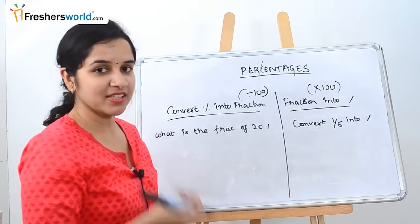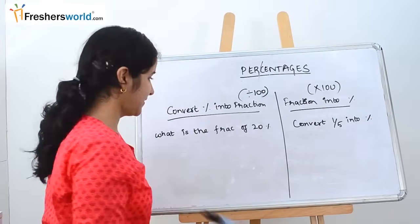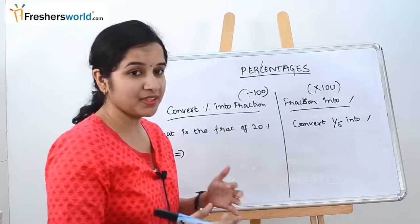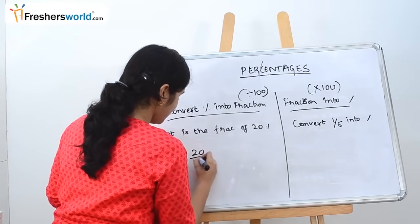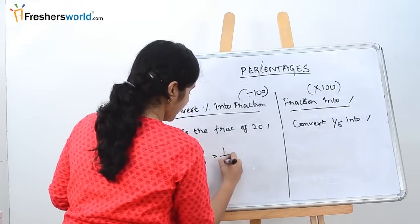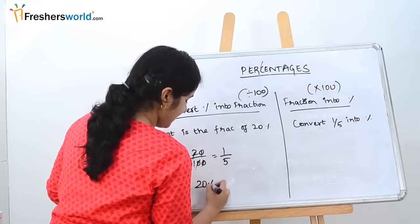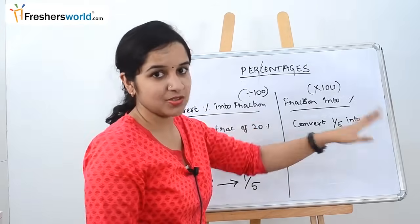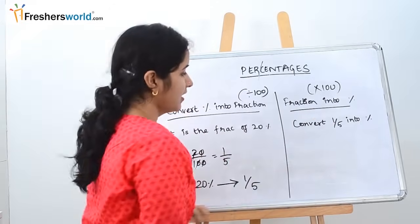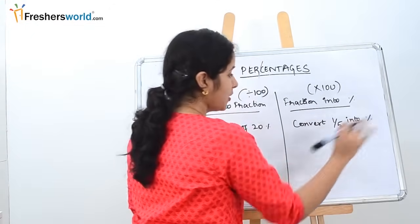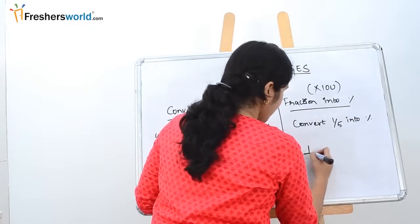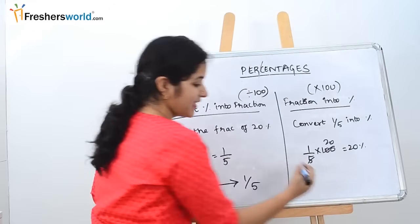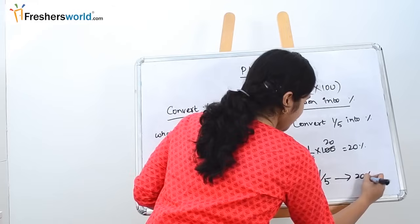To understand this concept better, let's solve a simple problem. What is the fraction of 20%? They are asking us to convert 20% into a fraction. 20% is nothing but 20 divided by 100, which is 1/5. Now for fraction to percentage: convert 1/5 into a percentage. We multiply by 100, which gives us 20%. So 1/5 converts to 20%.